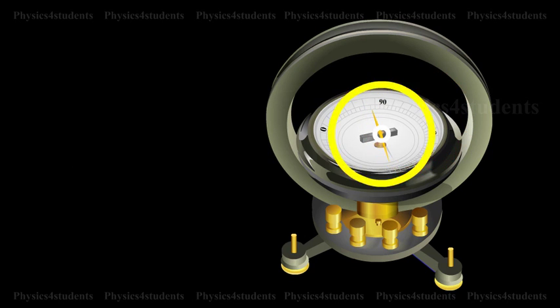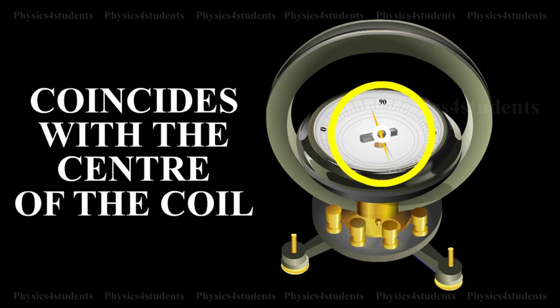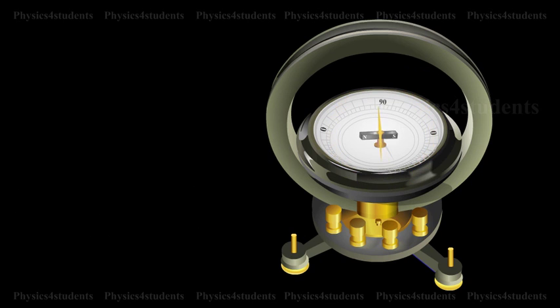The compass box is supported such that the center of the pivoted magnetic needle coincides with the center of the coil. Since the magnetic field at the center of the coil is uniform over a very small area, a small magnetic needle is used so that it remains in a uniform field even in deflected position.